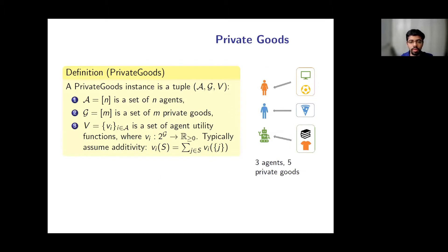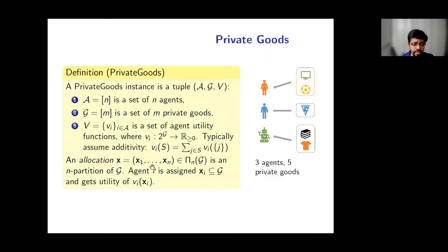I will now formally introduce the model of private goods. An instance consists of a set A of n agents, a set G of m private goods, and a set V of utility functions v1 through vn, where the function vi tells us the value that agent i has for a subset of the goods. Throughout this work, we assume that valuation functions are additive, meaning the value an agent gets from a set of goods is simply the sum of values of goods in that set. An allocation x is a partition of the goods into n parts x1 through xn, where agent i is assigned bundle xi and gets utility vi(xi).